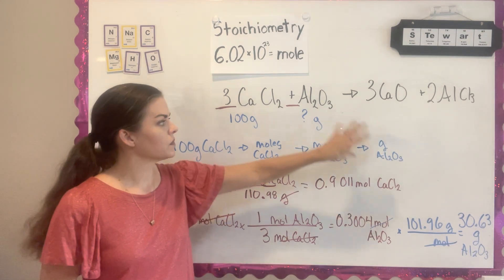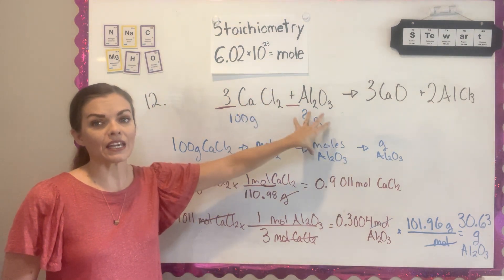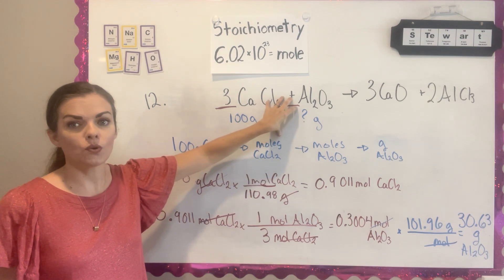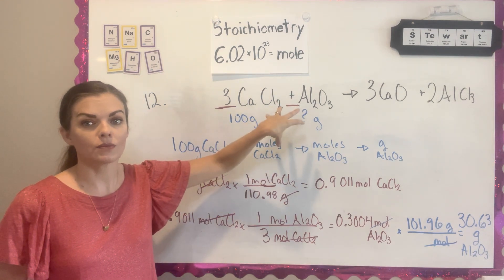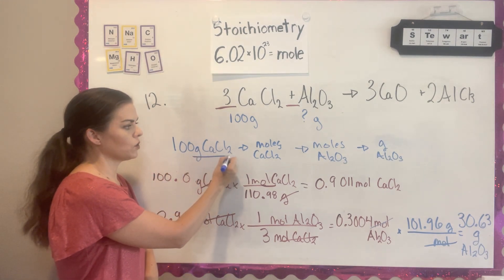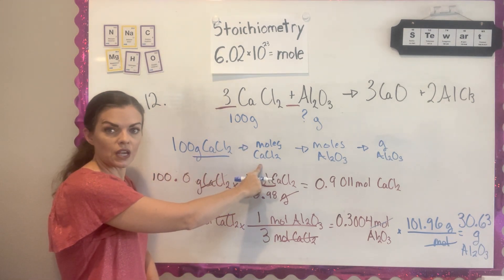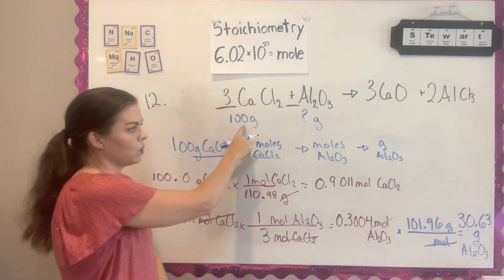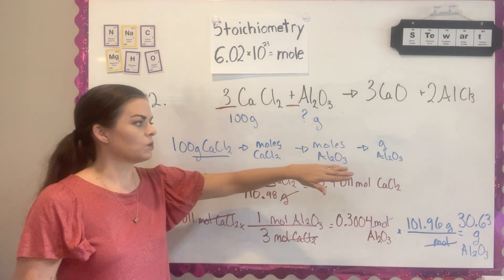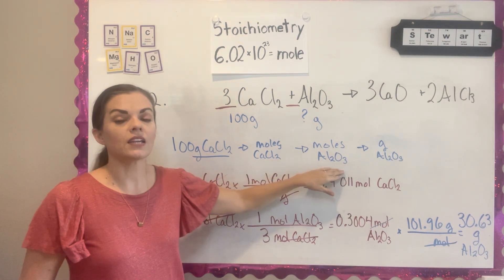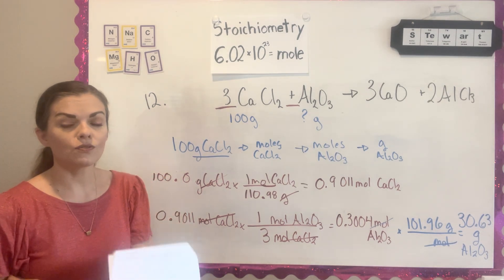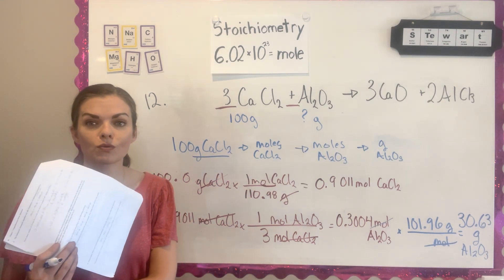To recap: they gave me grams and asked for grams, but I cannot use the balanced equation to go from grams to grams — I can only go from moles to moles. So I went from grams of CaCl2 to moles of CaCl2, then from moles of CaCl2 to moles of aluminum oxide, and finally from moles of aluminum oxide to grams. I'll see you for the next video of the Chapter 7 Review Questions.